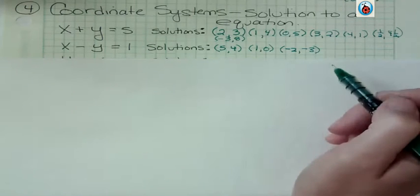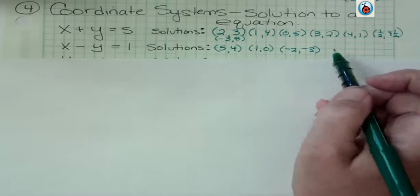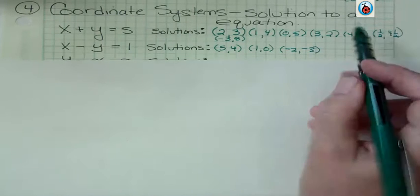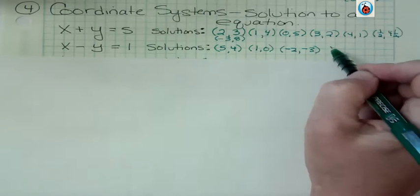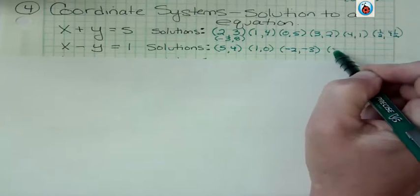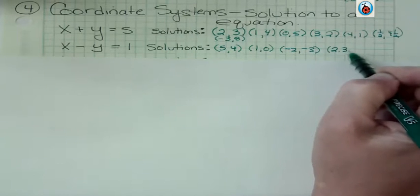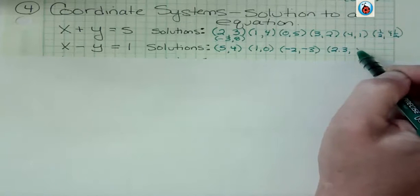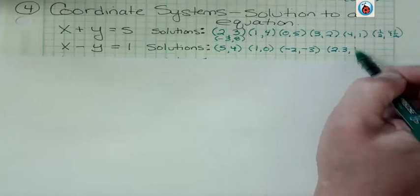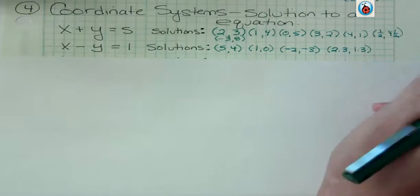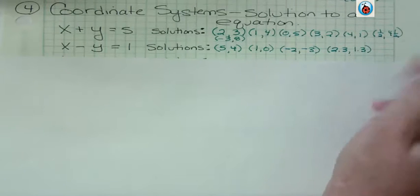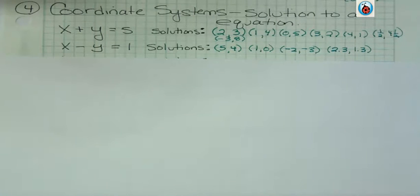Anything I choose, I could choose x to be negative 2 and then y would have to be negative 3. Now maybe you can't do that in your head, but you can plug them in and see that it's true. My point here is that there's an infinite number of solutions. I could say x is 2.3 and then y could be 1.3. If I subtracted those, I'd get 1, right? So I could have decimal solutions. I can have fraction solutions. I can have negative. I can have zeros.